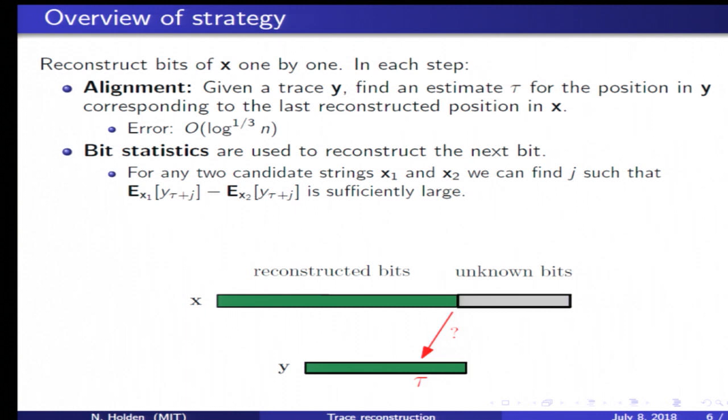After we have done this alignment step, we use bit statistics to identify the next bit. More precisely, if we have two candidate strings X1 and X2 for X, it's possible to find some index j such that bit tau plus j in the trace has a significantly different expectation for the two input strings. Using this result, we can distinguish between traces obtained from X1 and traces obtained from X2 by counting how many times bit tau plus j equals 1.